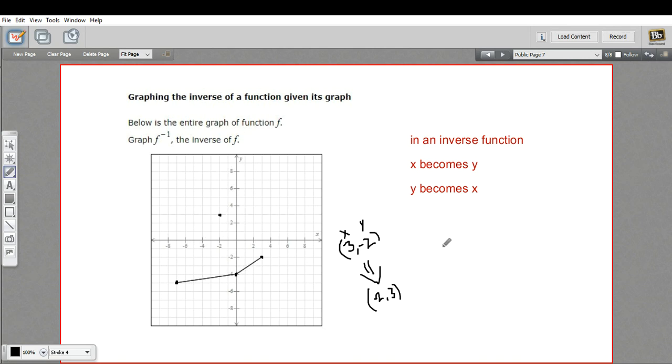Here we have the point 0, negative 4. So we'll do the same thing there, we'll just swap these. We get negative 4, 0. So let's find that one right here.